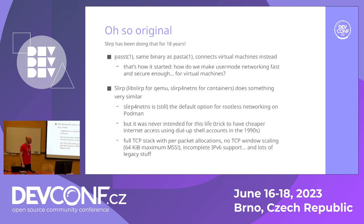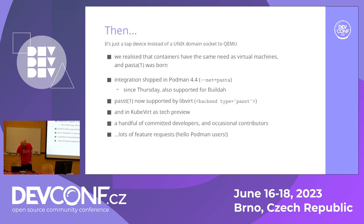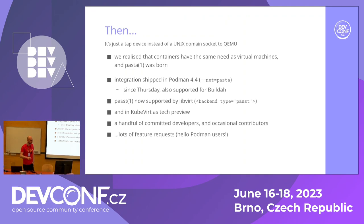IPv6 support wasn't really there. IPv6 was introduced a bit before, but there was no reason to use it — we still had plenty of IPv4 addresses. So we realized that, pasta was born, and then with a lot of help from Podman's development team, we shipped a native integration in Podman 4.4. That was in January this year. Since two days ago, this is now supported in BuildKit — that's a facility for creating container images in Podman.